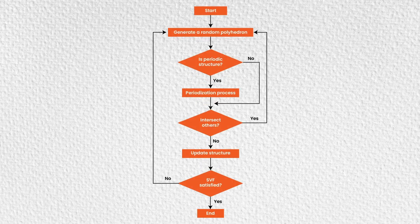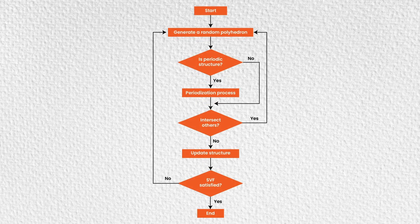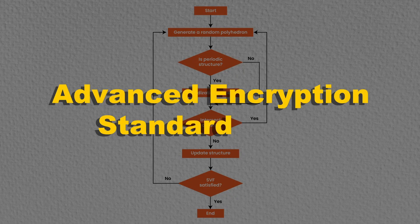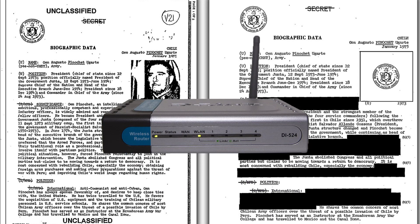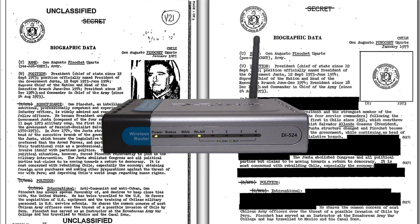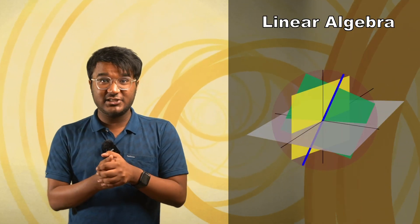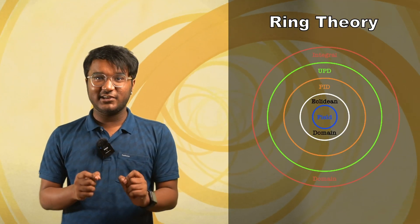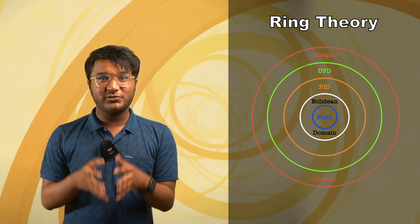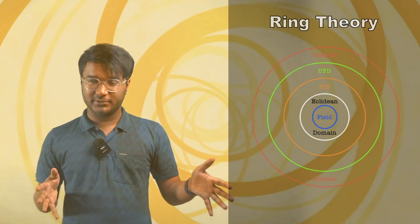Another modern standard for data encryption, the Advanced Encryption Standard or AES, is used to encode everything from classified government documents to the traffic emanating from your very Wi-Fi router. The AES beautifully weaves several key mathematical concepts like linear algebra, matrices and ring theory to produce a robust mechanism of encryption.